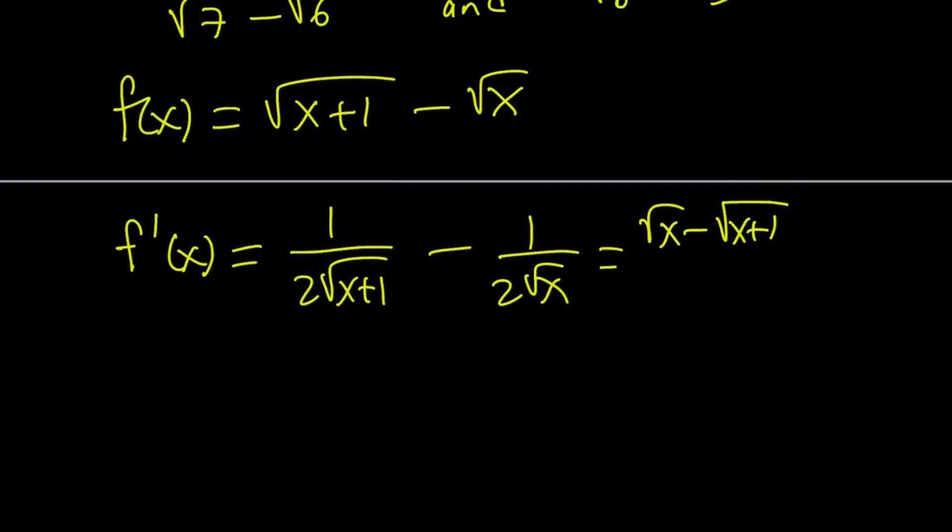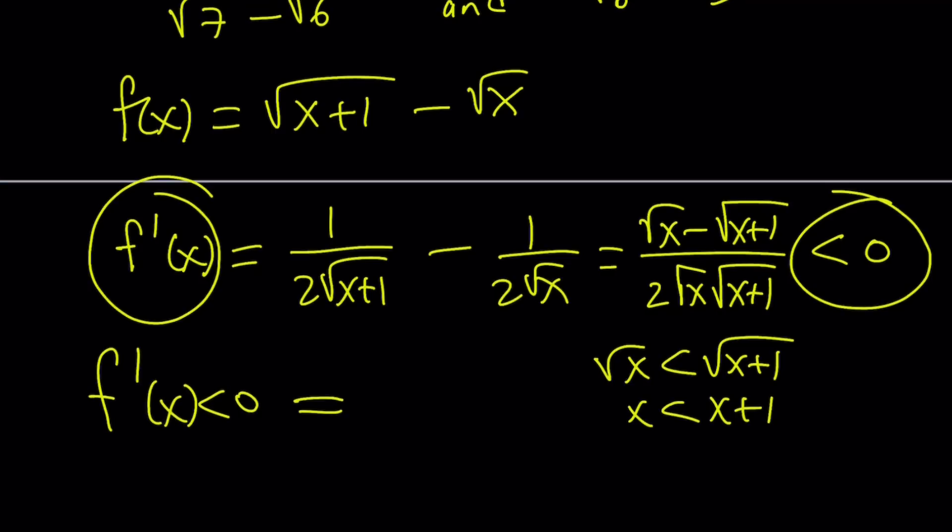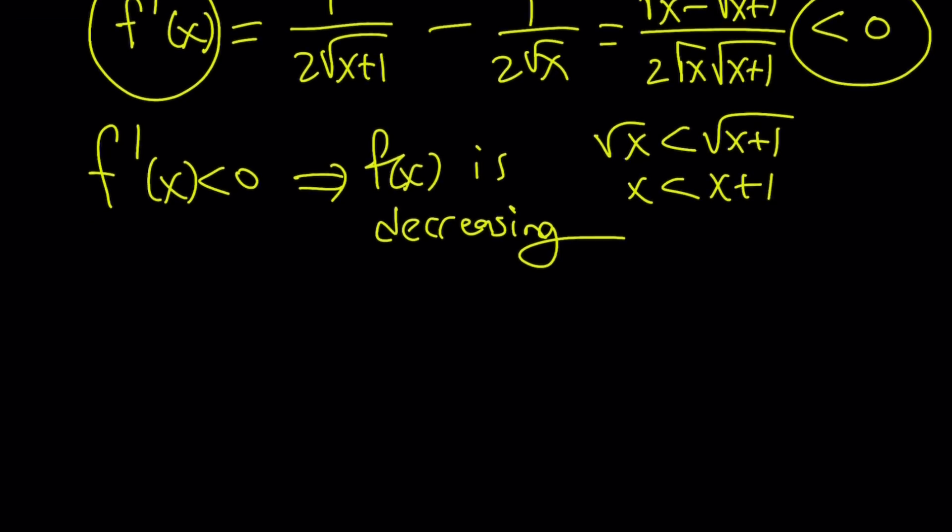Now, notice that the denominator is always positive and the numerator is always negative. Why? Because square root of x is always less than square root of x plus 1. Why? Because x is always less than x plus 1. Why? Because 0 is less than 1. So, this is negative. So, what does that mean? f prime is less than 0. It means our function f is decreasing. Always. It always decreases from whatever the domain is, the smallest value to infinity. So, f is decreasing which means f of 6 must be less than f of 5. Because 6 is greater than 5 in a decreasing function, the inequality is reversed when you evaluate both sides with f.